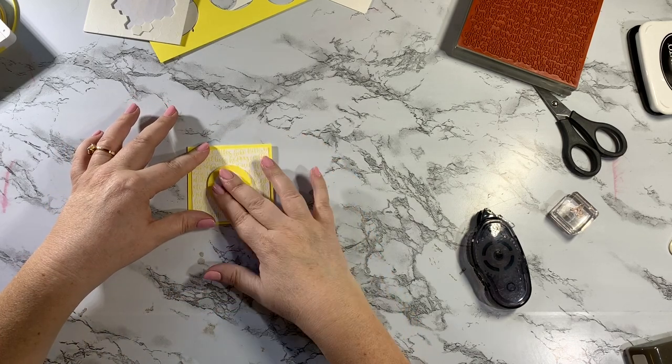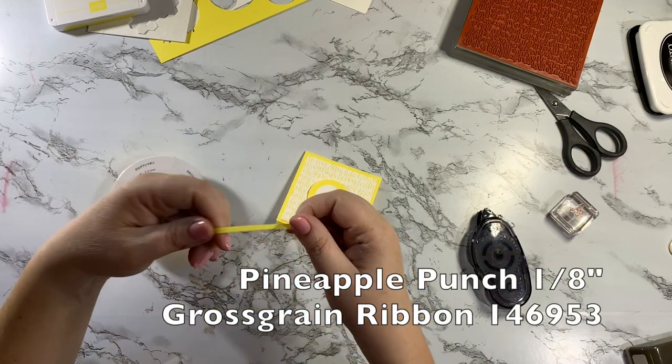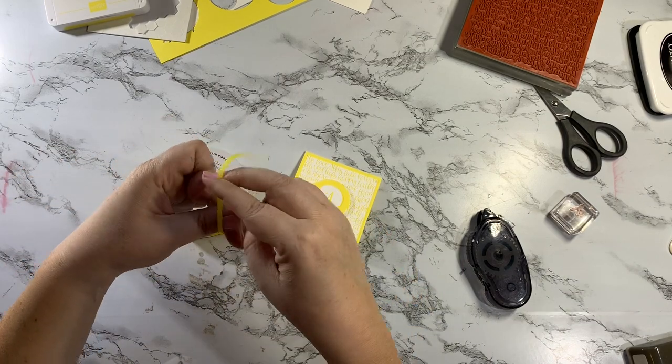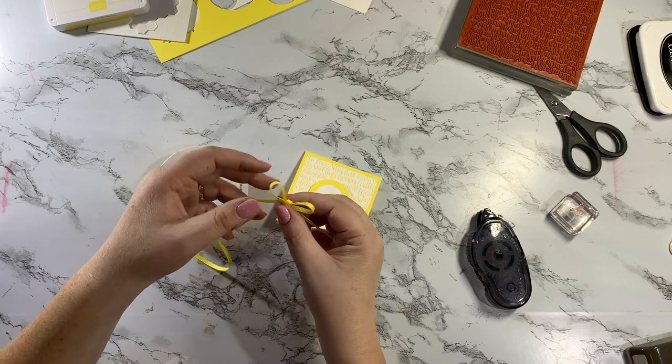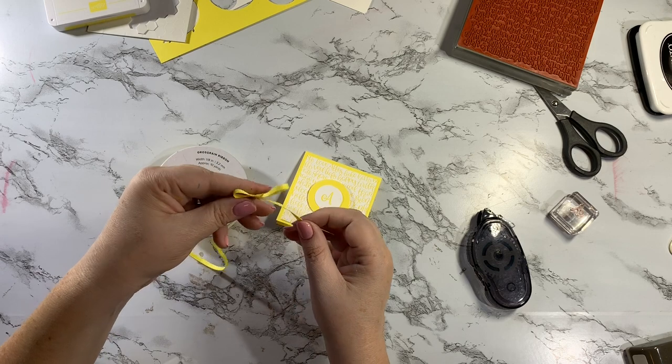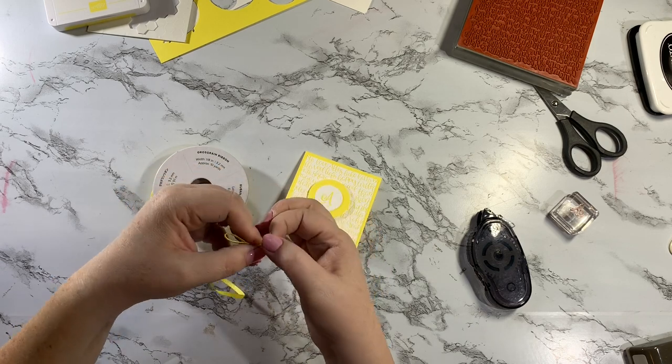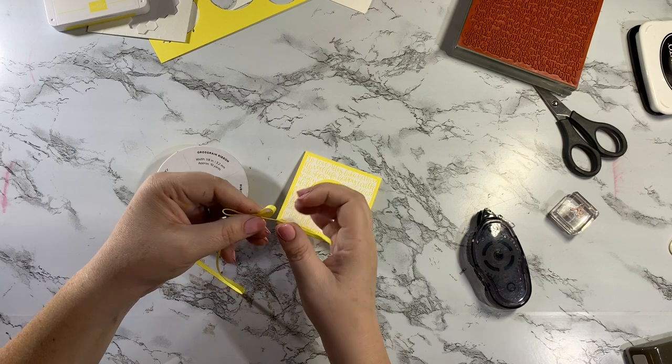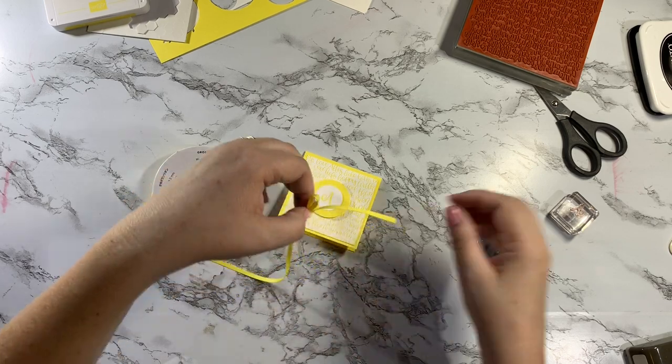And then to finish it off I have the pineapple punch grosgrain ribbon here. And I'm just gonna tie a little bow. And I want it to be pretty tiny, so I'm gonna pull it pretty tiny. I just want to keep pulling until it gets to be about the size you want. Okay, that looks good.